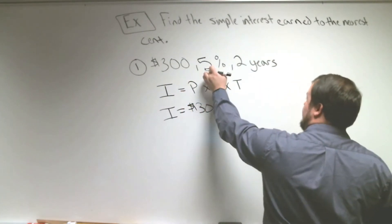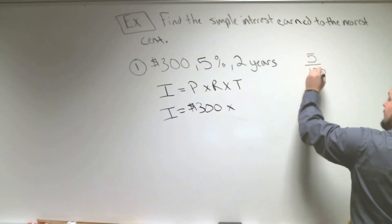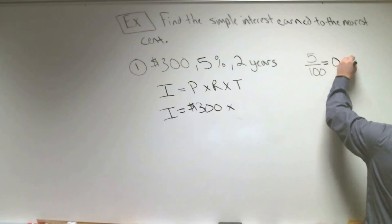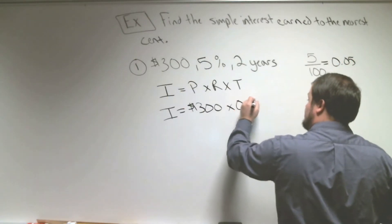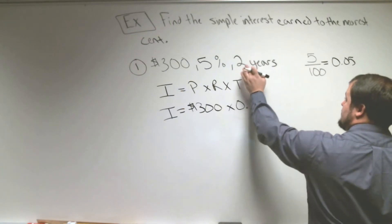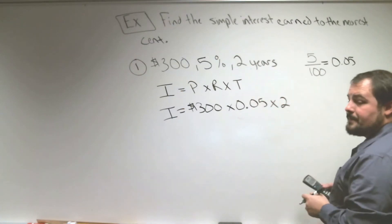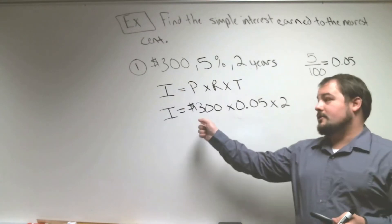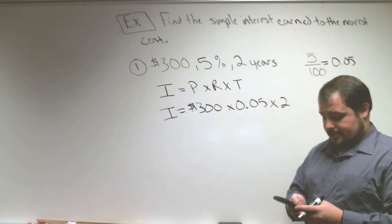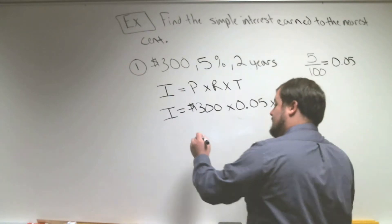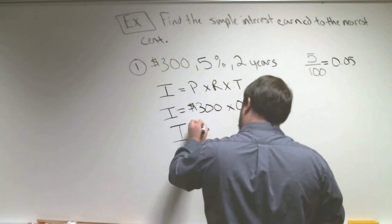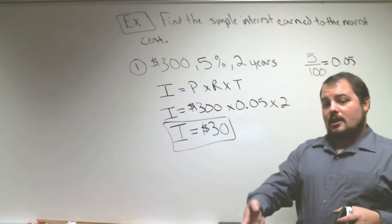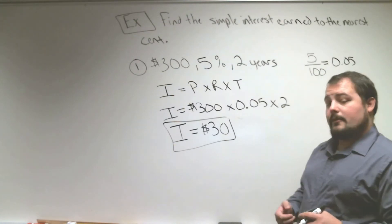Our interest is going to equal our principal of $300, multiplied by 5%. We want to take 5 and divide it by 100 to get our decimal, so 5% as a decimal is 0.05. We multiply by 0.05, and then by two years — it is expressed in years, so that's good. If we multiply straight across, 300 times 0.05 times 2, our interest equals $30. So we're going to make $30 in interest at a 5% interest rate leaving it in the bank for two years.